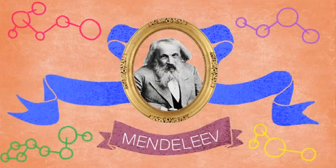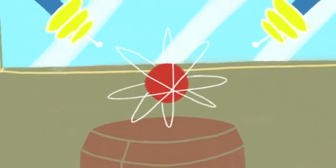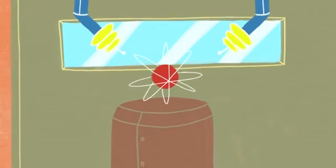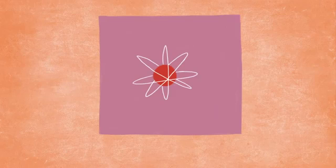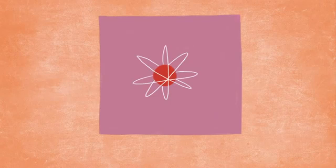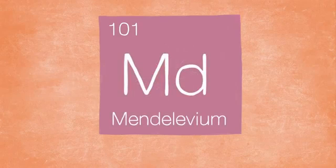Dimitri died without a Nobel Prize in 1907, but he wound up receiving a much more exclusive honor. In 1955, scientists at UC Berkeley successfully created 17 atoms of a previously undiscovered element. This element filled an empty spot in the periodic table at number 101 and was officially named Mendelevium in 1963.